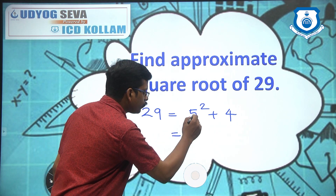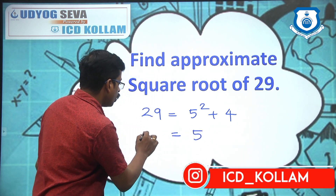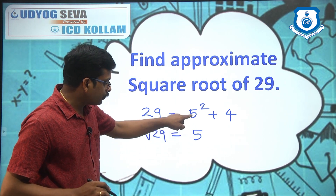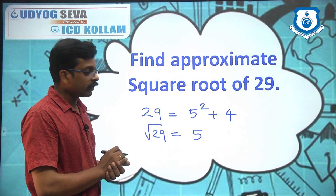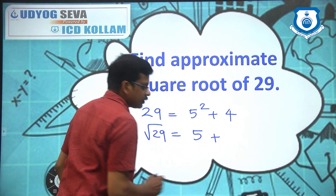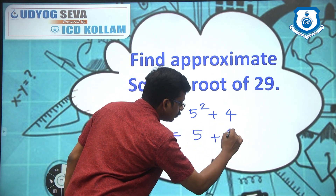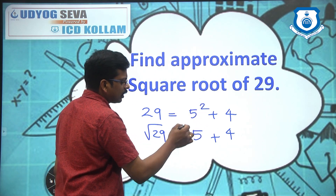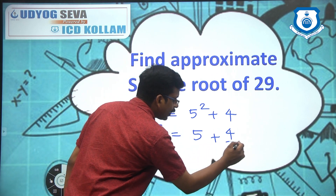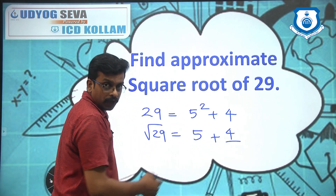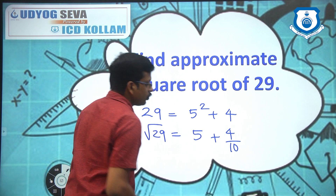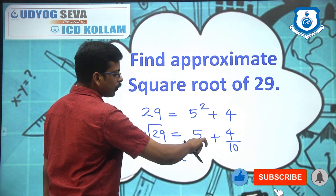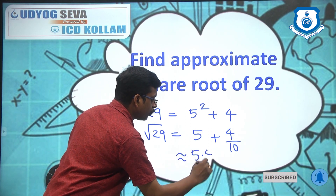So I am taking that value 5. Root 29 will be equal to 5. Writing 5 here. Now, plus 4 divided by — whatever number comes here, its product will be the denominator. So: 4 divided by 5 times 2. 5 times 2 is 10. So your approximate answer should be equal to 5 plus 0.4, which is 5.4.